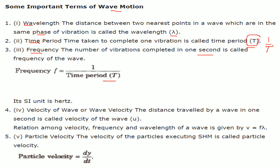The SI unit of frequency is Hertz (Hz). The wave velocity V is the distance traveled by a wave in one second. There is a relationship between velocity, frequency, and wavelength: V equals F times lambda. Frequency can also be written as nu (ν) as seen in textbooks — we write F here because V and nu look similar.